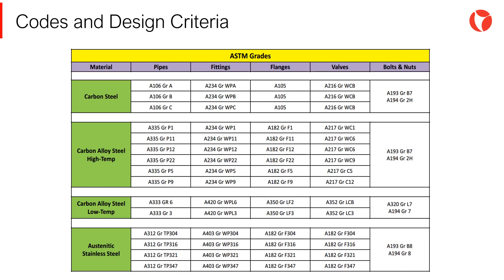The biggest challenge with the ASTM or ASME designation lies in the fact that even when the metallurgy is the same for the whole vessel — carbon steel, for example — components may have different designations depending on their fabrication method: cast, forged, welded, etc. For example, for carbon steel metallurgy, a pipe may be A106 grade B, while a flange would be A105.